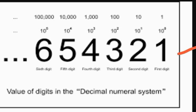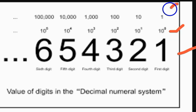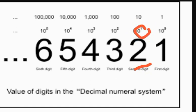For example, the digit 1 — its value would be written as 10 raised to power 0, which equals 1. The digit 2 — its value would be written as 10 raised to power 1, which is equal to 10.